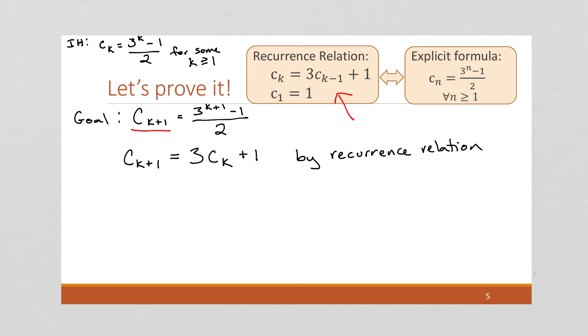And now I have c sub k that I can use my inductive hypothesis on. So that's what I'm going to do. So I'm now going to use my inductive hypothesis to say this is 3 times 3 to the k minus 1 over 2 plus 1. And this is by the inductive hypothesis.